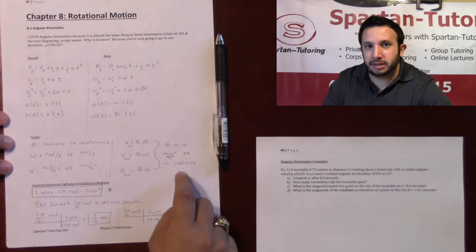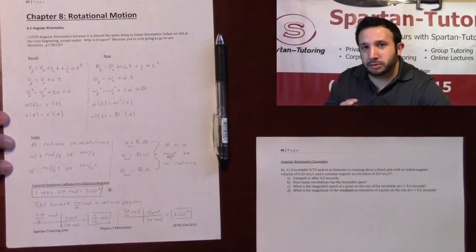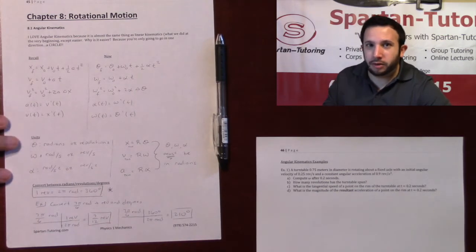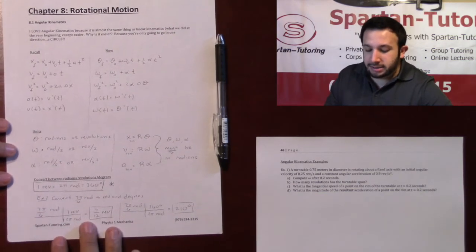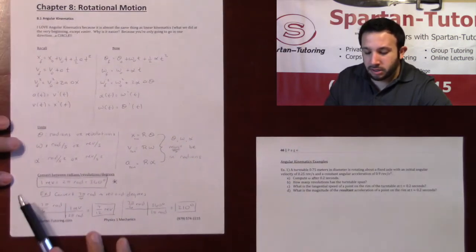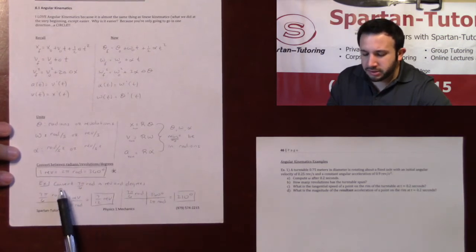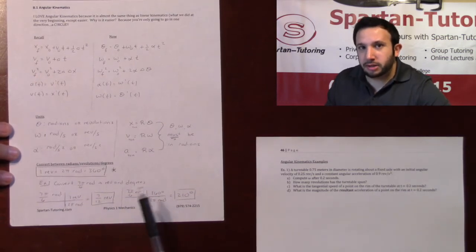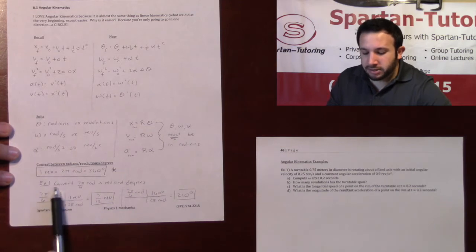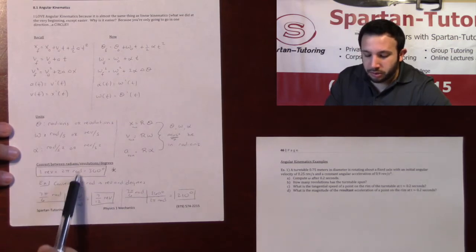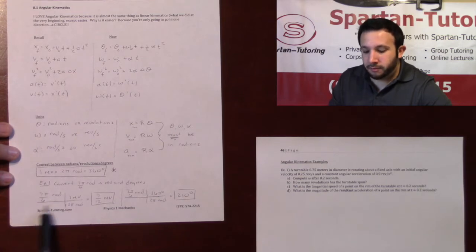For these conversions to work, your angular quantities cannot be in revolutions or degrees — they must be in radians. You need to convert between revolutions, radians, and degrees. I don't memorize six separate equations; instead I use the relationship: one revolution equals two pi radians equals 360 degrees. Then I apply dimensional analysis. For example, to convert 7π/6 radians into revolutions, put revolutions on top: one revolution over two pi radians, then divide.